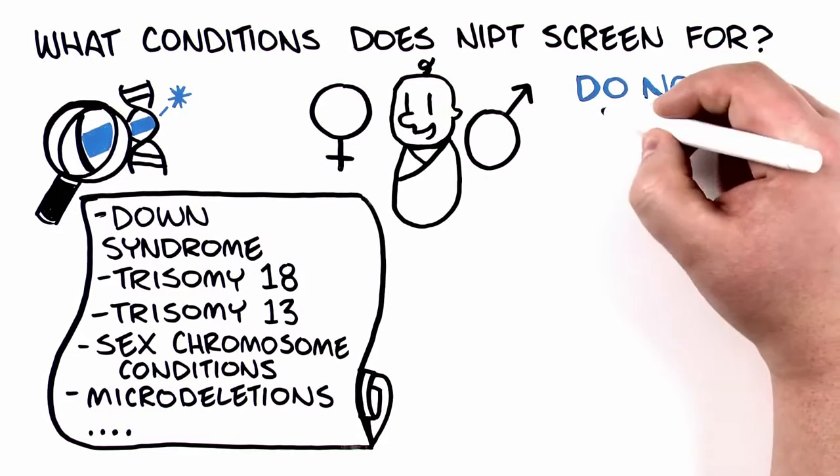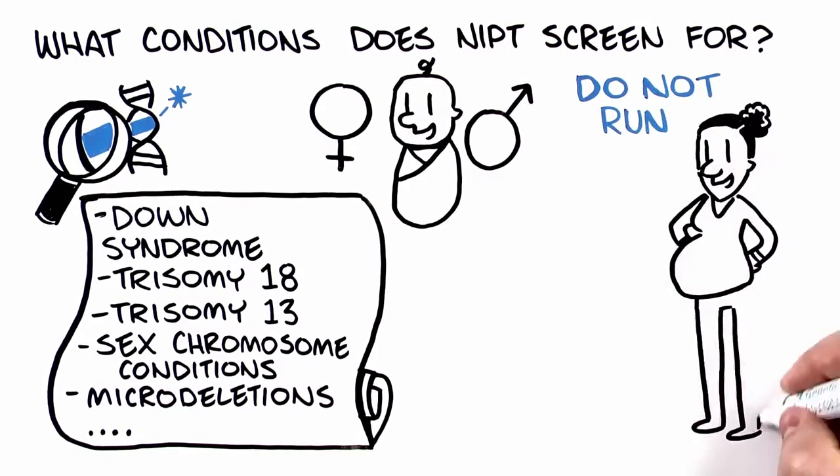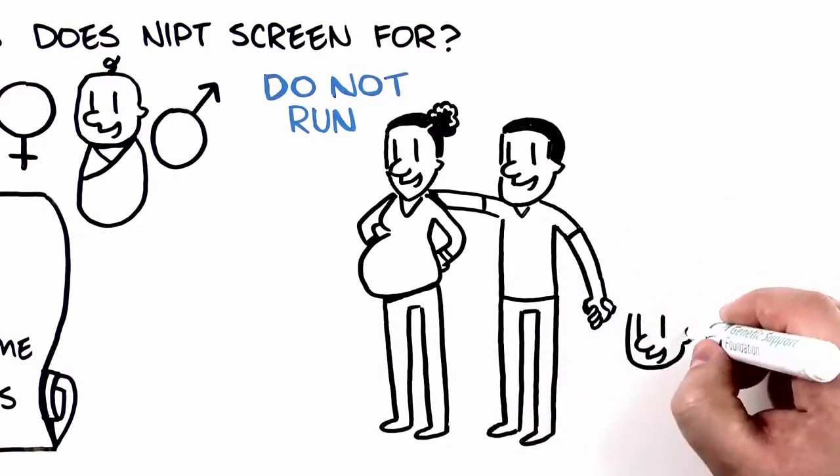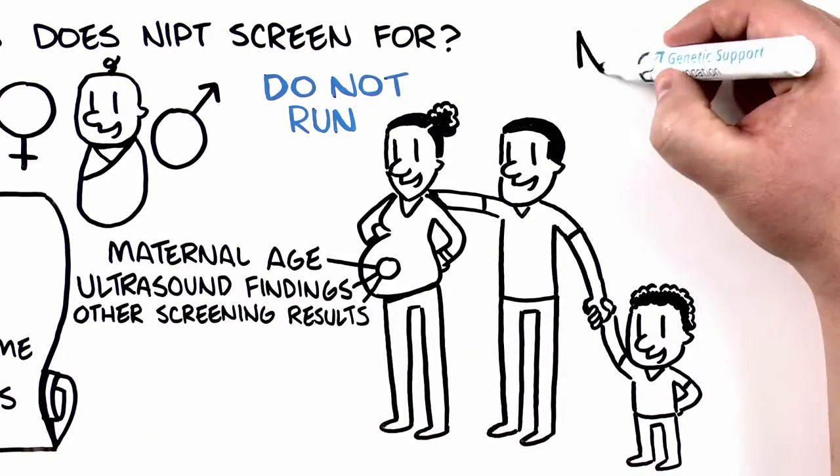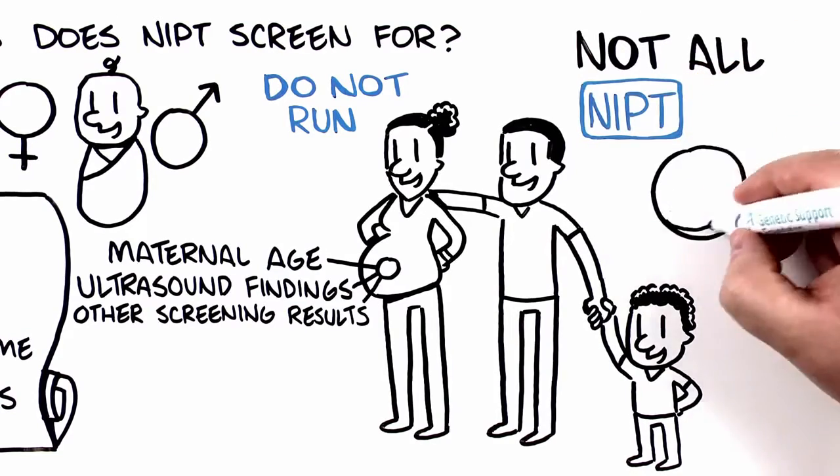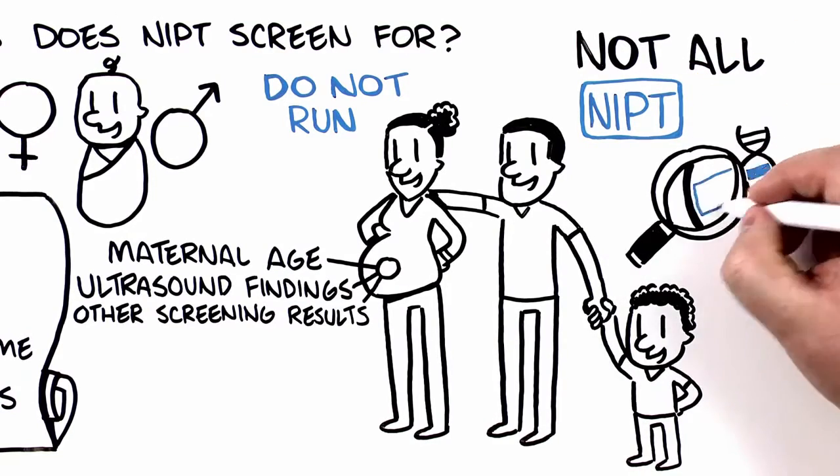Most of the conditions screened for do not run in families. The chance that a pregnancy is affected with a condition depends on a number of factors. Another note, not all NIPT labs screen for the same conditions.